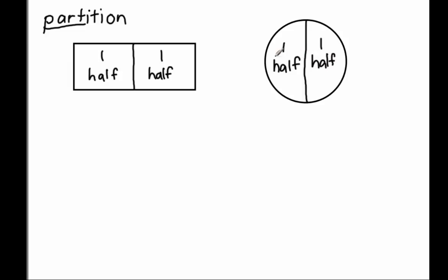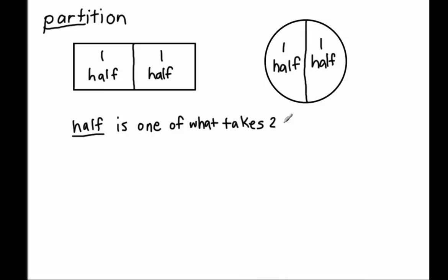So we've figured out what we call one of what it takes two of to make a whole — we call it a half. A half is one of what it takes two of to make a whole. How many halves make up a whole? The noun is 'half,' so let's count them: one half, and this is another half. How many? Two halves. So it takes two halves to make a whole.